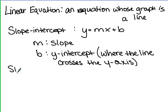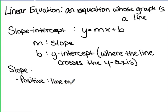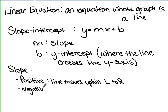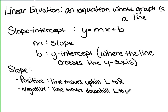Just a couple things about the slope of a line. Slope can be either positive or negative. A line is going to have a positive slope if the line goes uphill from left to right. It would be a negative slope if the line goes downhill from left to right.